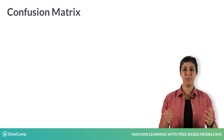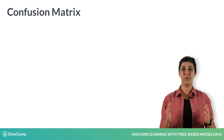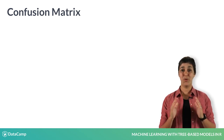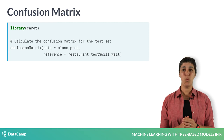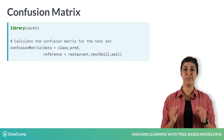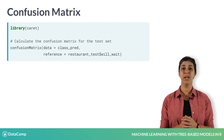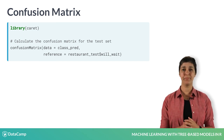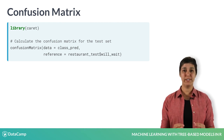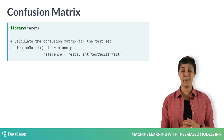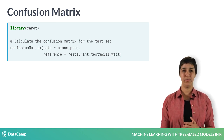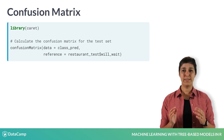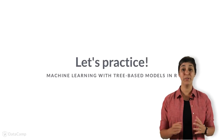Let's create a confusion matrix in R using the restaurant dataset. To create a confusion matrix in R, we use the confusionMatrix function from the caret package. The arguments you need to specify are the data and the reference. The data argument is a vector of predicted class labels on a test set, and the reference is a vector of the true class labels.